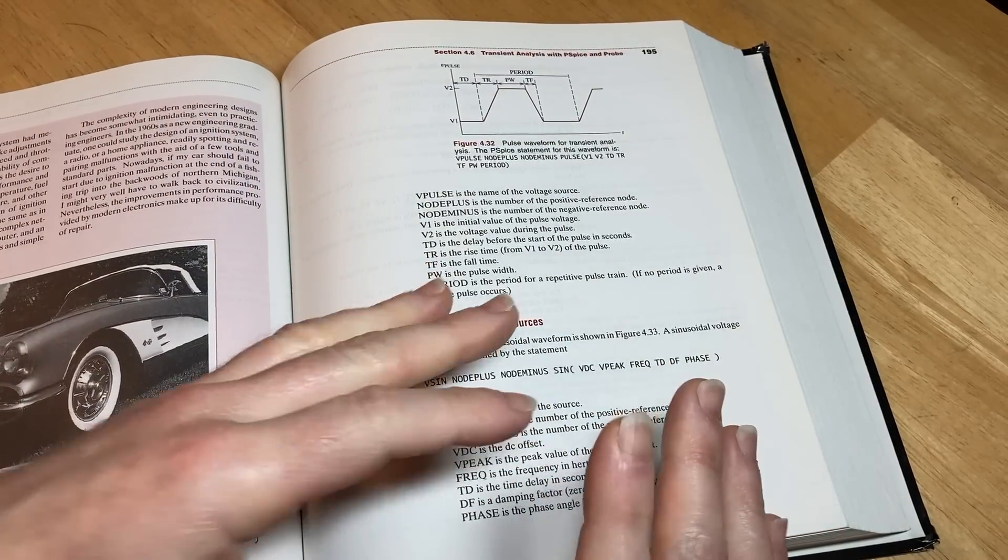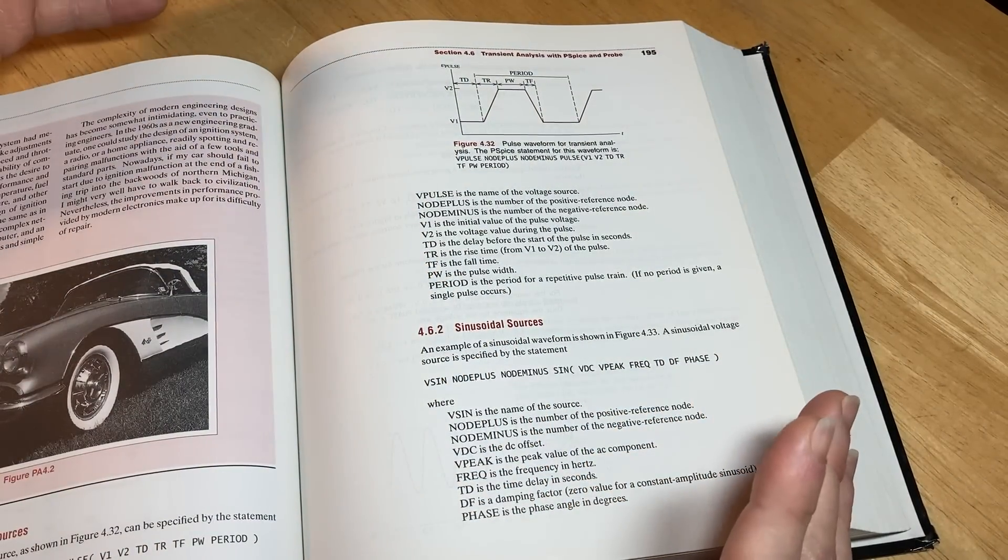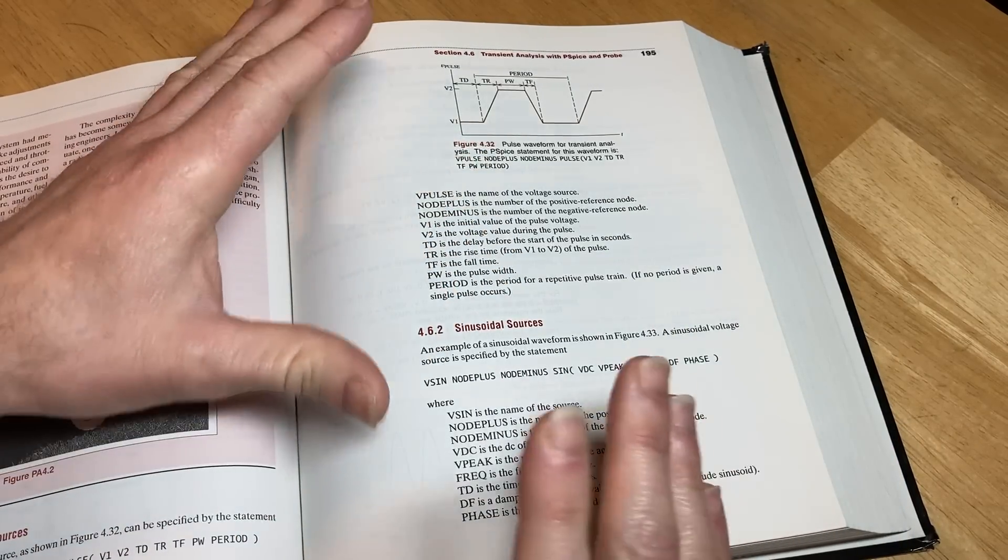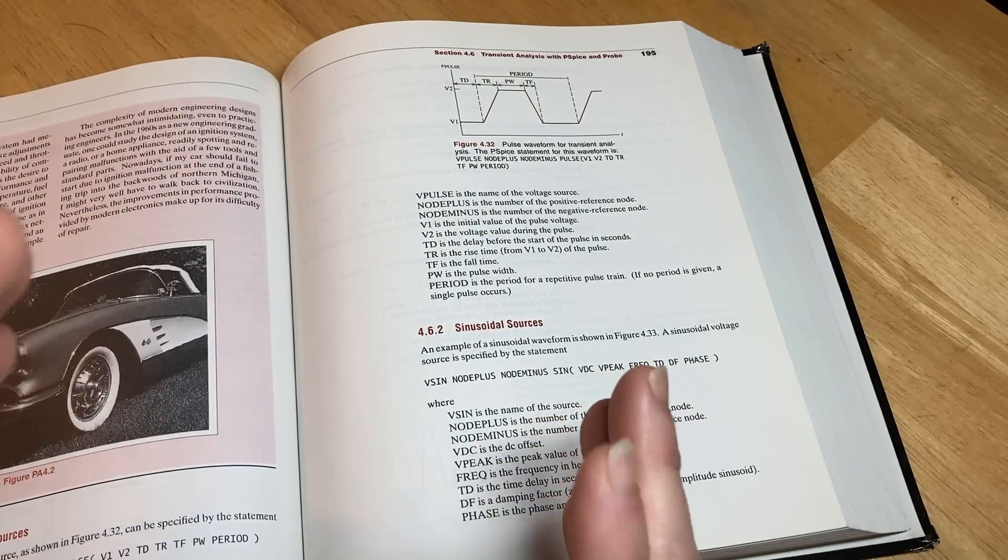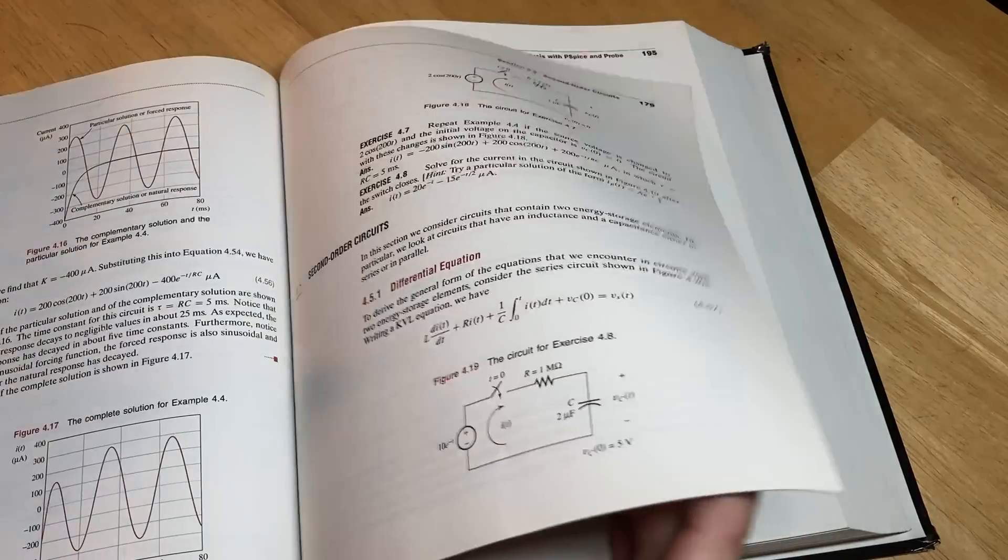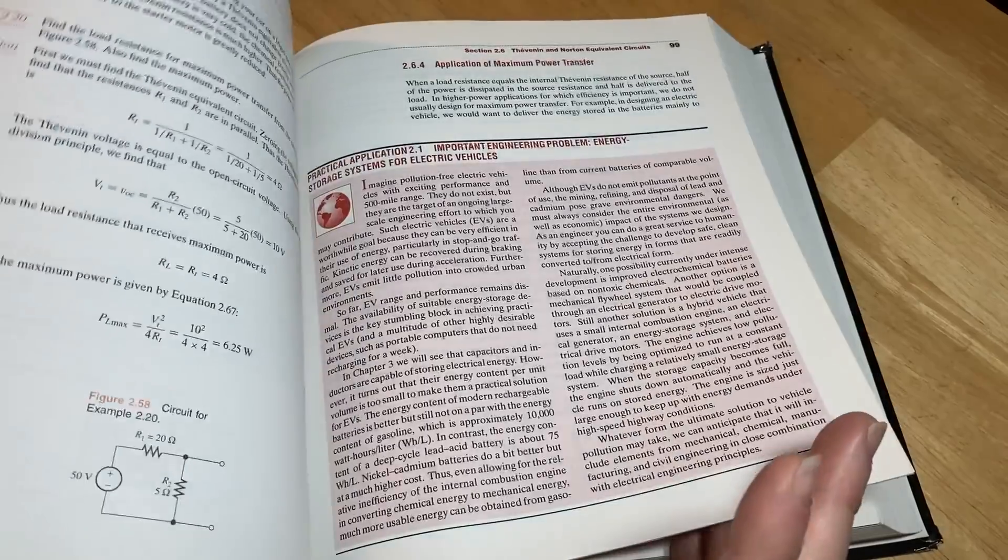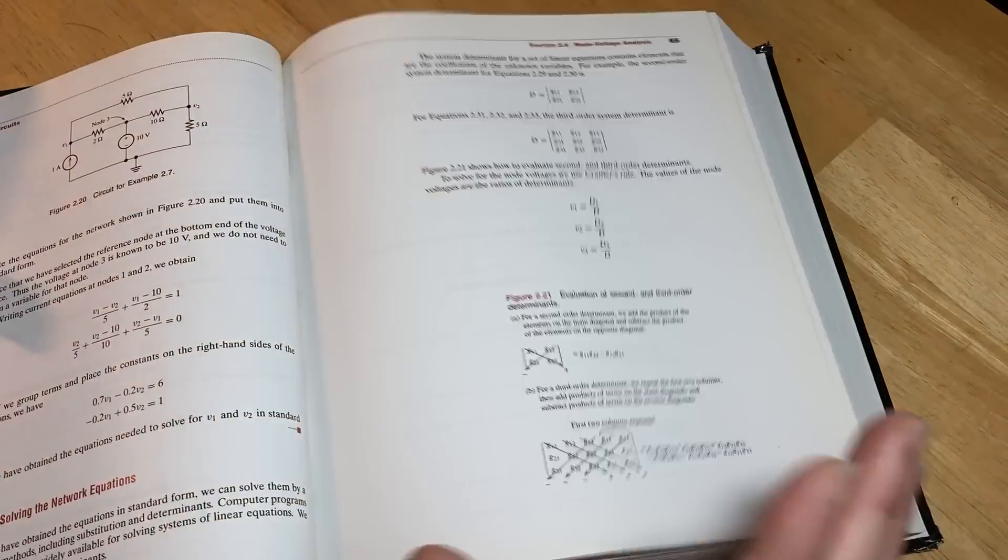Just to make the point, in a typical calculus class of, let's say, 30 students, let's say 20 are engineers, you might only get one or two students that are electrical engineers, and the rest might be mechanical or something else. I don't know why. It could be because it's harder. It could be because there's more math.